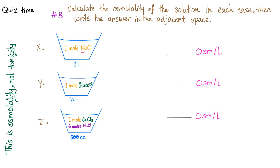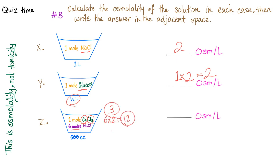Here we count sodium and chloride — these are 2 particles because it's ionizable. If you have glucose, it's non-ionizable, so the answer is 1, but it's in half a liter — so the answer becomes 2. Here we have 1 mole of calcium chloride — that's 3 particles: 1 calcium and 2 chlorides — and 6 moles of sodium chloride: 6 times 2 is 12. So 3 plus 12 is 15 in half a liter, meaning 30 per liter.